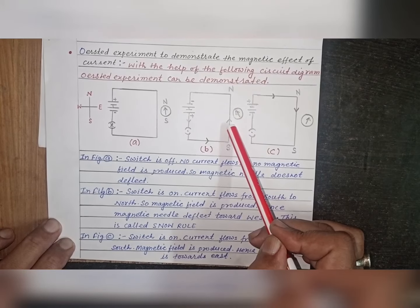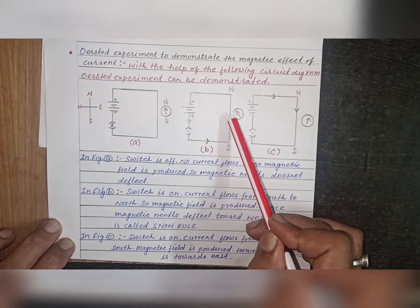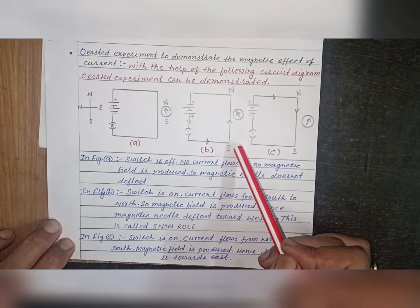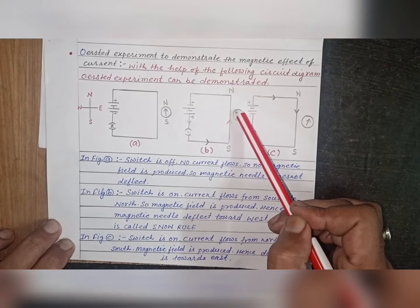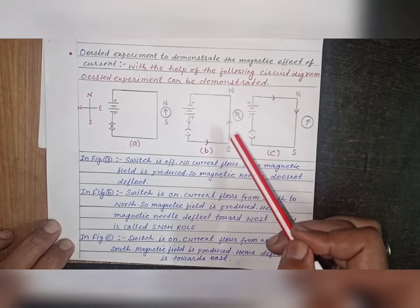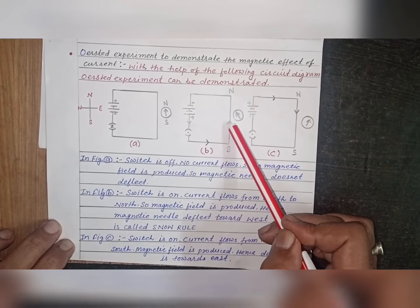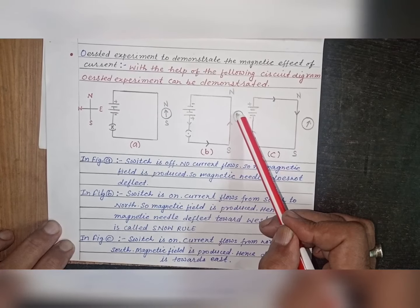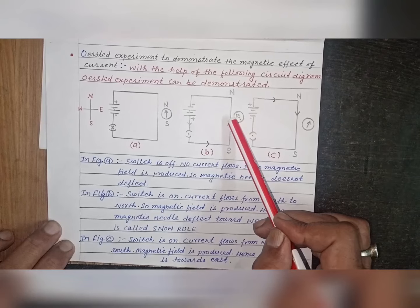Due to this current, magnetic field is produced around this wire. Magnetic needle is placed below this wire.